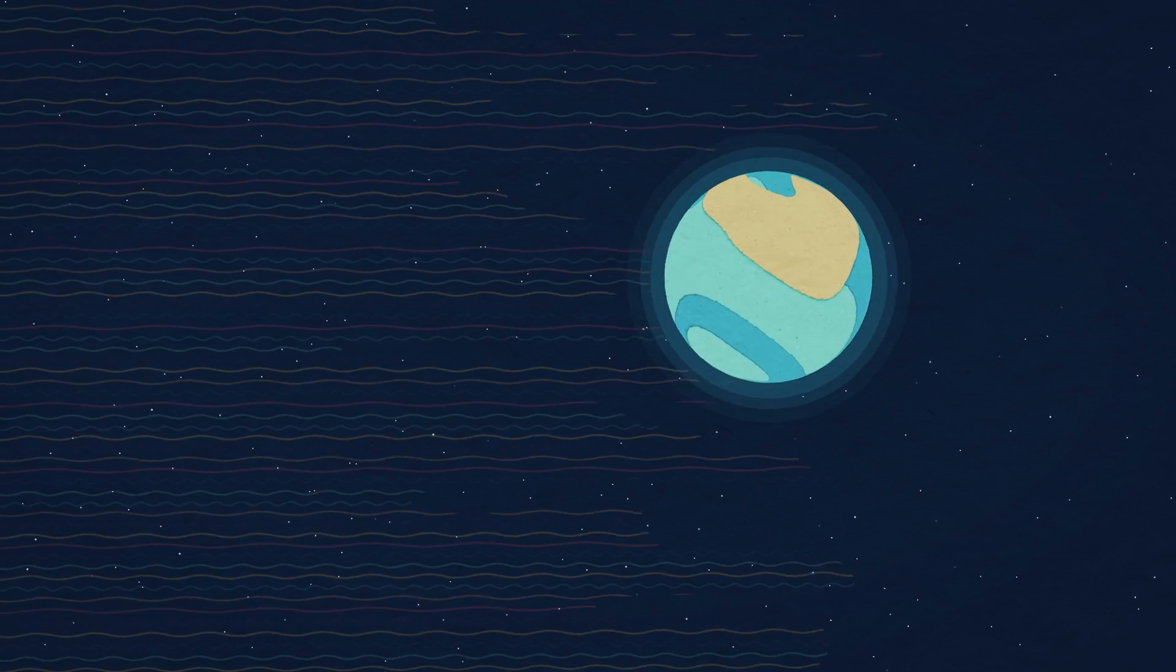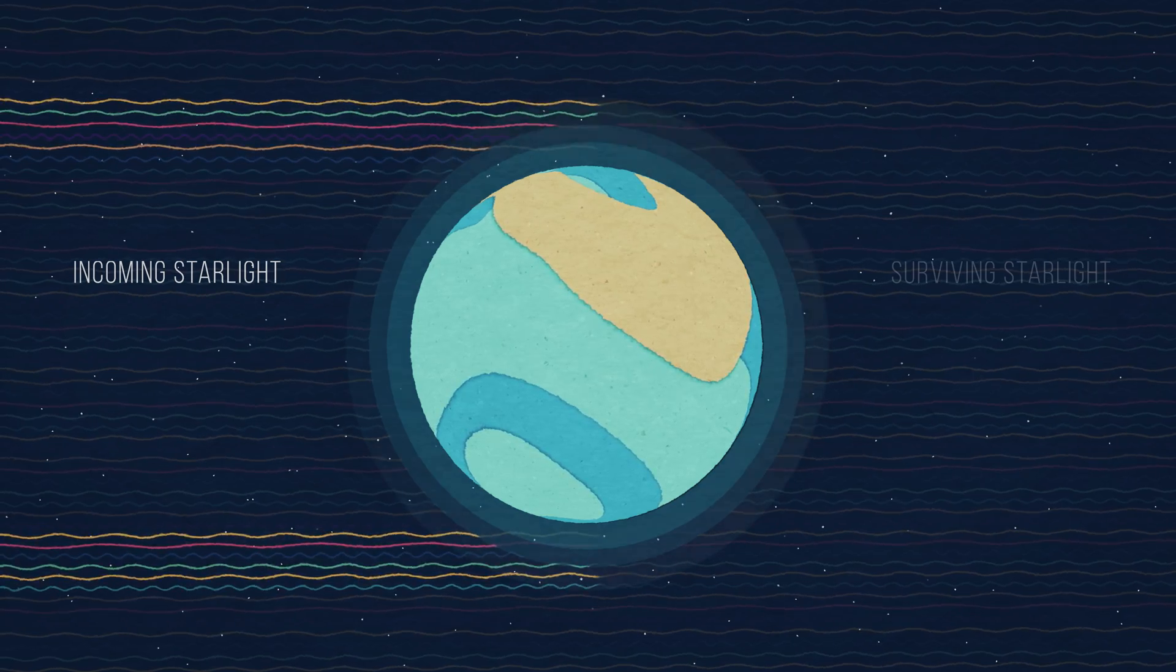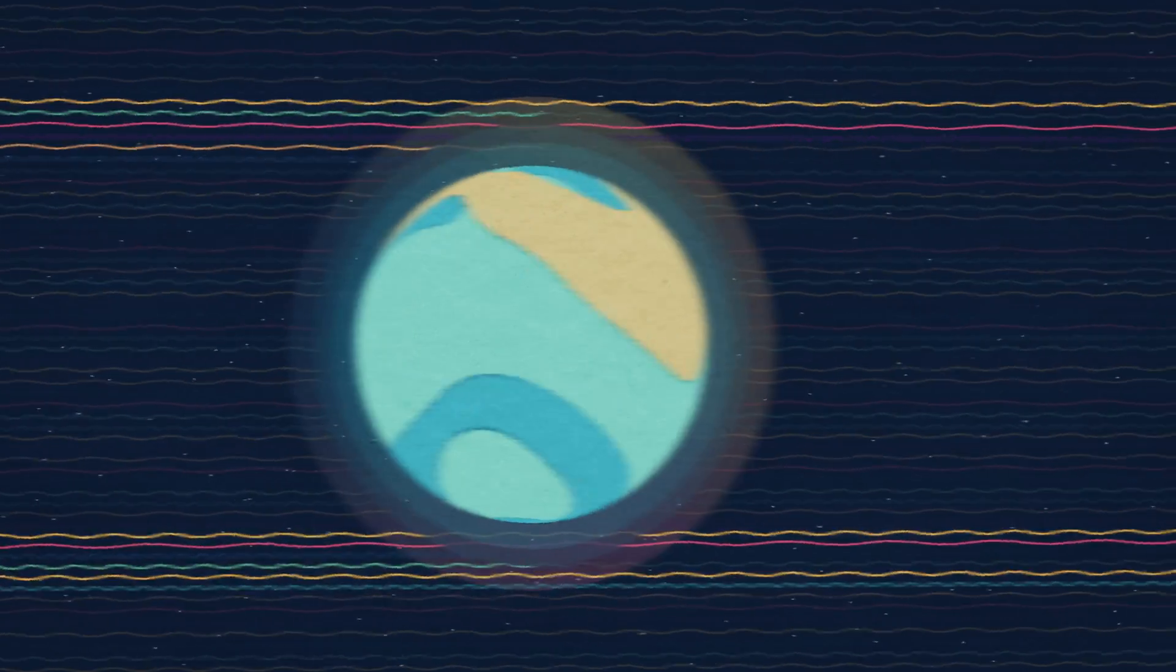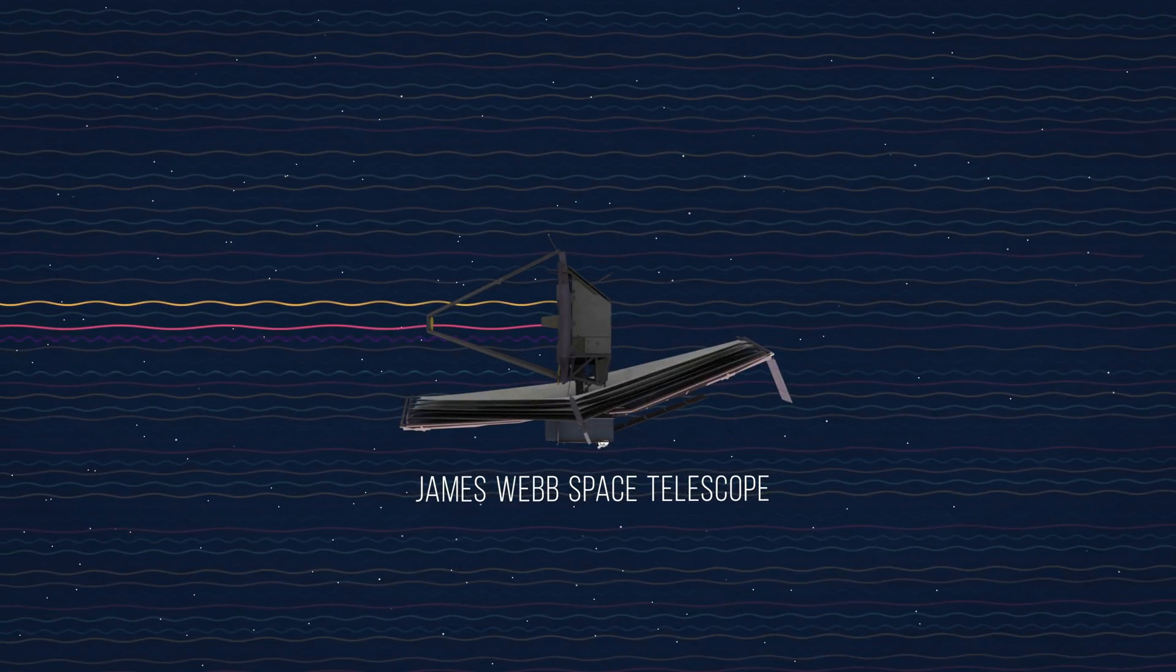During a transit, some of the star's light travels through the planet's atmosphere and gets absorbed. The light that survives carries information about the planet across light-years of space where it reaches our telescopes.